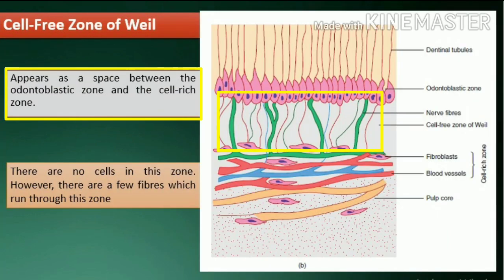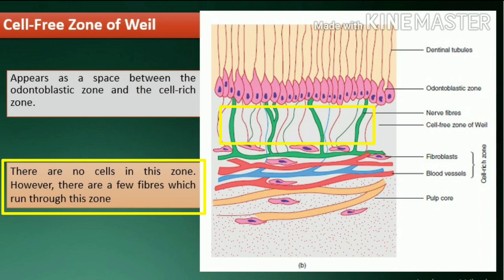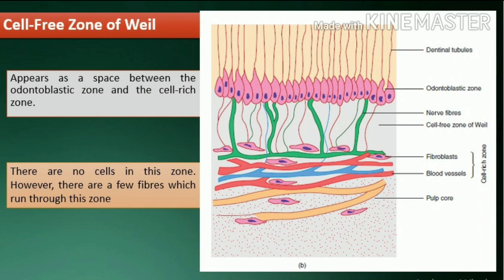Cell-free zone of Weil. The cell-free zone of Weil appears as a space between the odontoblastic zone and the cell-rich zone. There are no cells in this zone; however, there are a few fibers which run through it.